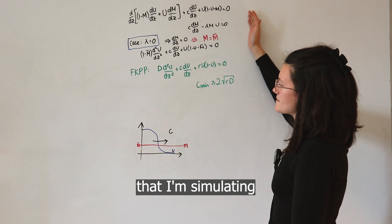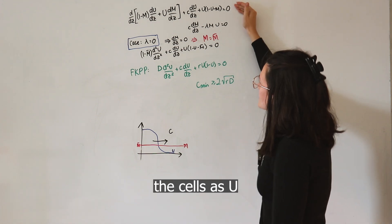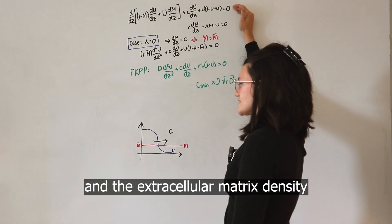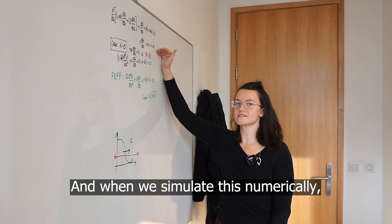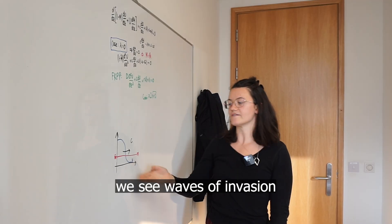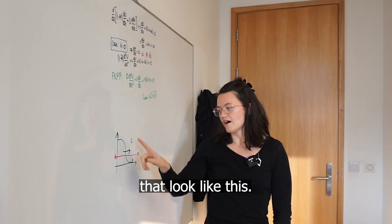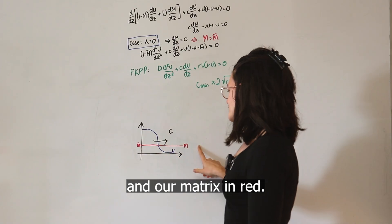I have this one model here that I'm simulating, where we model the cells as U and the extracellular matrix density as M. And when we simulate this numerically, we see waves of invasion that look like this. Our cells are modeled in blue and our matrix in red.